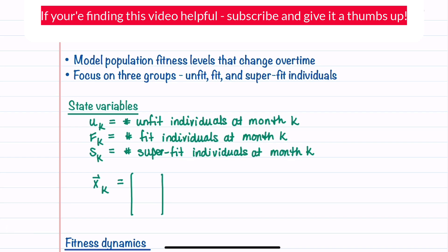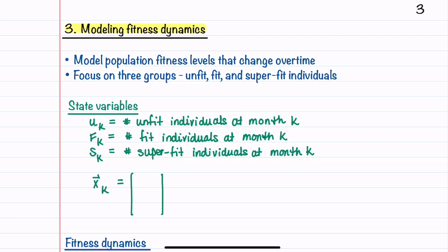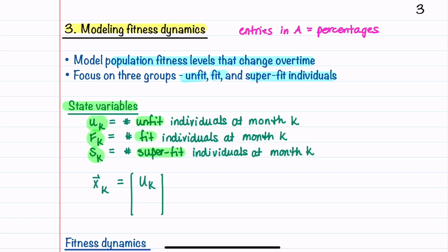Let's now see how difference equations can be used to model fitness dynamics. This problem is different from the previous one because all entries in matrix A will be percentages. We're going to model population fitness levels that change over time, focusing on three groups: unfit, fit, and superfit individuals. Our state variables are u_k (number of unfit individuals at month k), f_k (number of fit individuals at month k), and s_k (number of superfit individuals at month k). So x_k = [u_k, f_k, s_k].